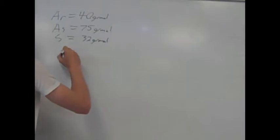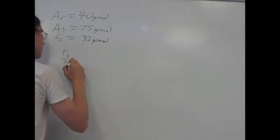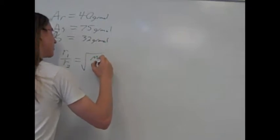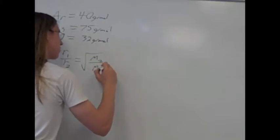R1 over R2 equals the square root of M2 over M1, where R1 and R2 are the rates of effusion of two gases, and M1 and M2 are the molar masses of said gases.